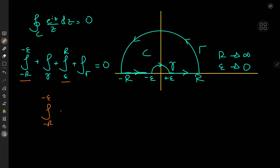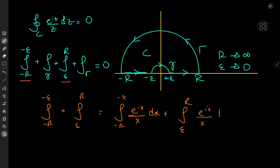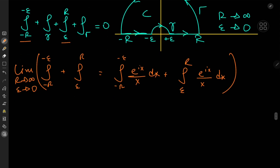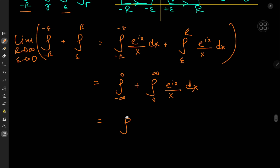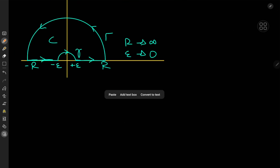We break the contour integral into parts: the integral from −R to −ε, plus the integral over γ, plus the integral from ε to R, plus the integral over Γ — all equal to zero. We're interested in the limiting case R→∞ and ε→0. On the real line, replacing z by x, the two real-line integrals combine in the limit to give the integral from −∞ to +∞ of e^{ix}/x dx, which I'll call the target integral I.